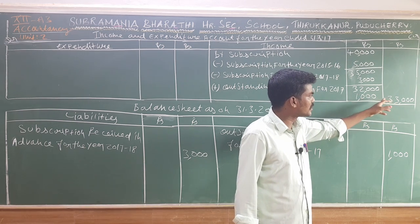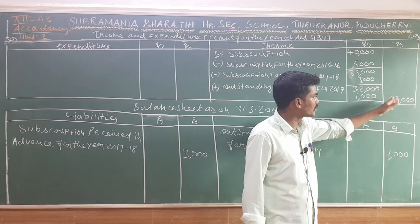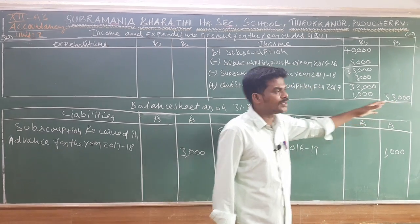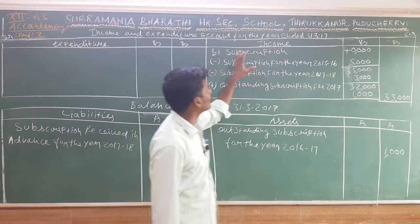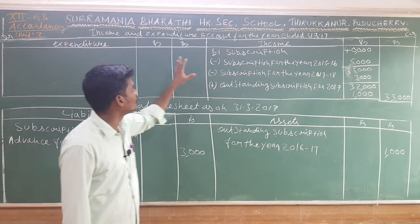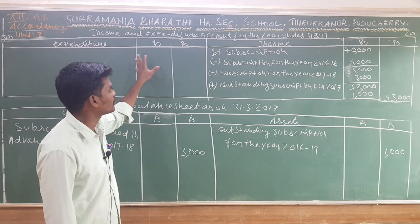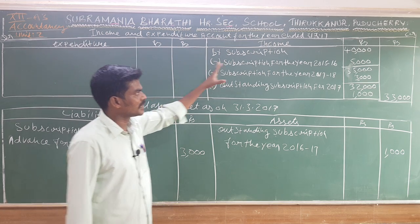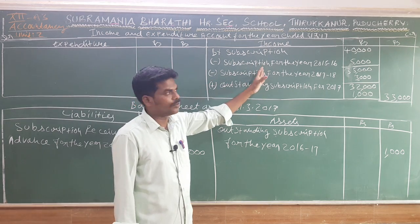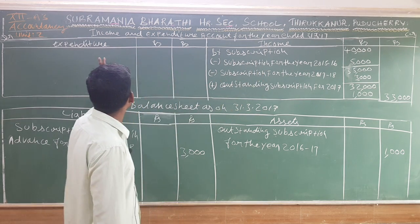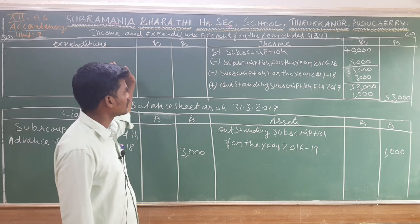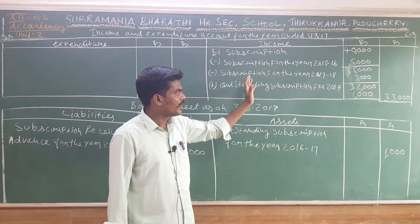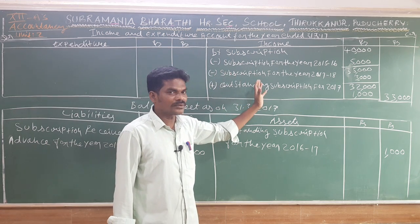In the income and expenditure account, the subscription amount is ₹33,000. In the final account, the subscription will appear on the income side of the income and expenditure account.